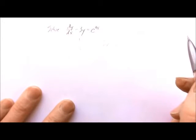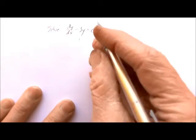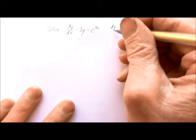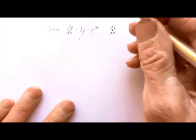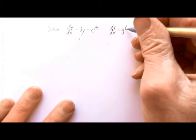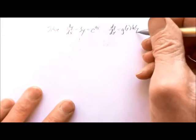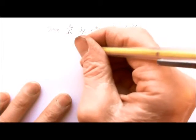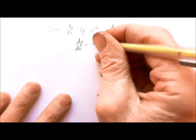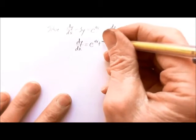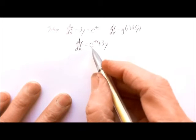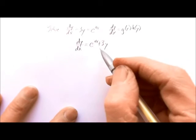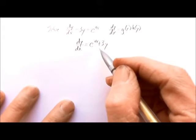First, let's show why we can't do this using separation of variables. Separation of variables only works when we have an equation that can be written in the form dy/dx equals some function of x times a function of y. If we solve for dy/dx alone, we get dy/dx equals e^(4x) plus 3y. Here we have a function of x and a function of y, but rather than being multiplied, they're being added — so we can't use separation of variables.